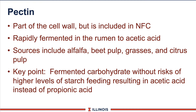Next is pectin. Pectin is part of the cell wall but is included in the NFC fraction. It rapidly ferments and therefore falls in that category. The good news is it produces acetic acid instead of propionic acid contributed by starch, for example.